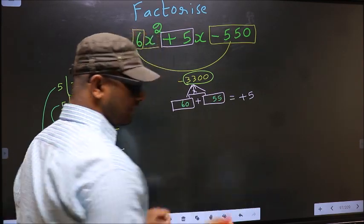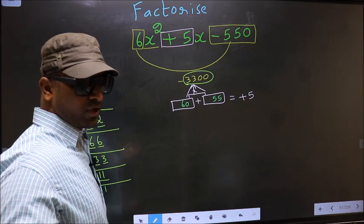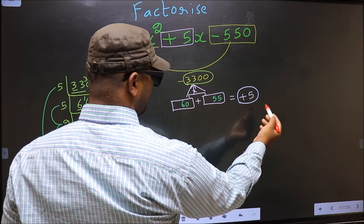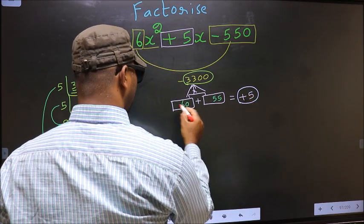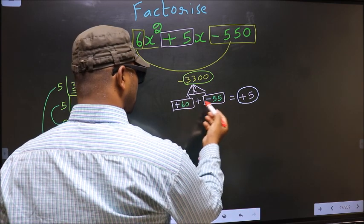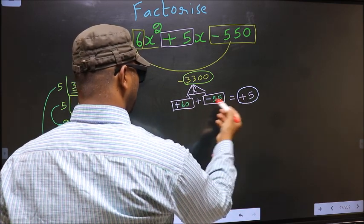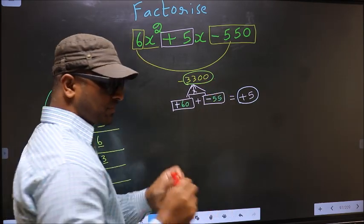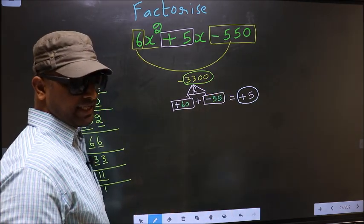Now we should adjust the signs. What I mean is, over here we have plus 5. To get plus 5, we should put plus here and minus here. Plus 60 minus 55 is plus 5. Plus 60 into minus 55 is minus 3300. So we have adjusted the signs.